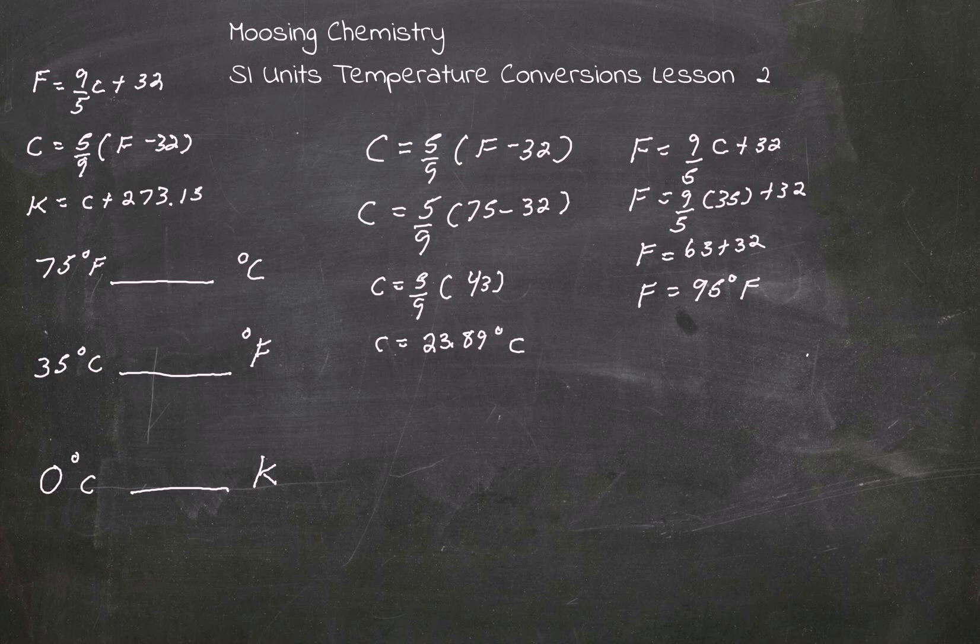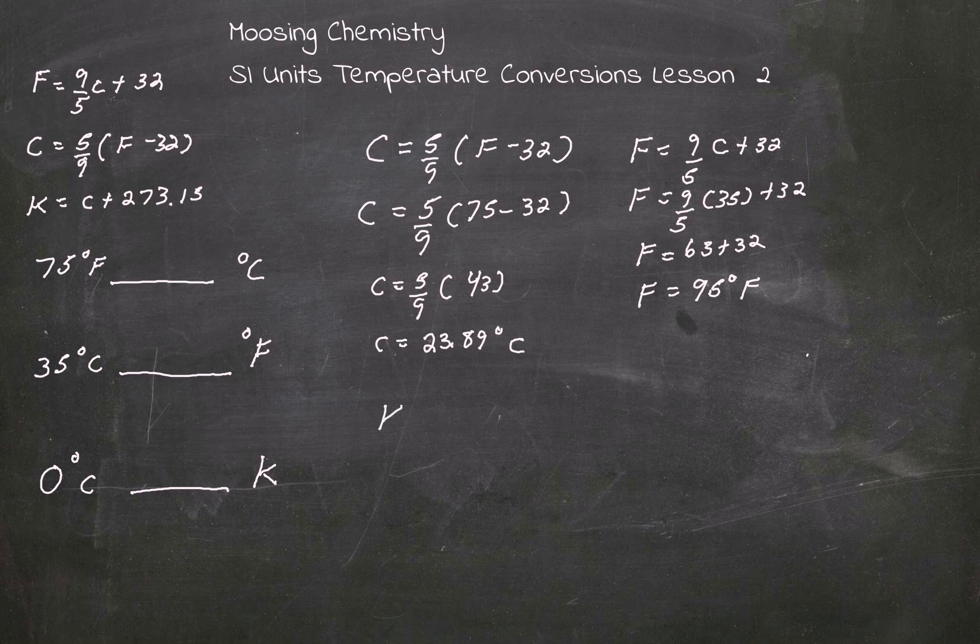Let's look at one more problem. We're going to convert 0 degrees Celsius into Kelvin. We'll use the formula K equals C plus 273.15.